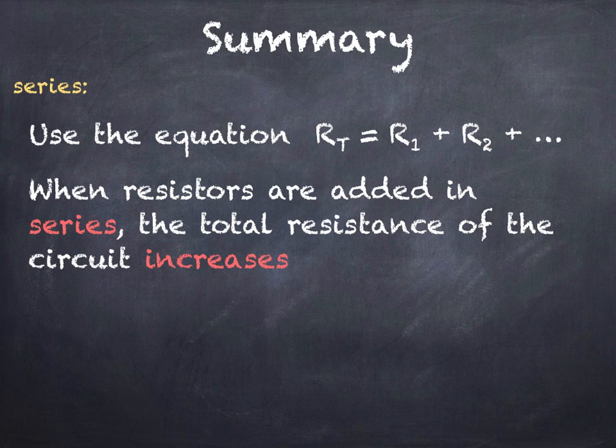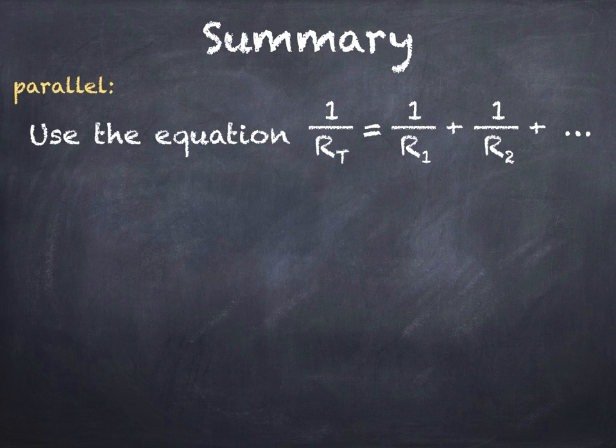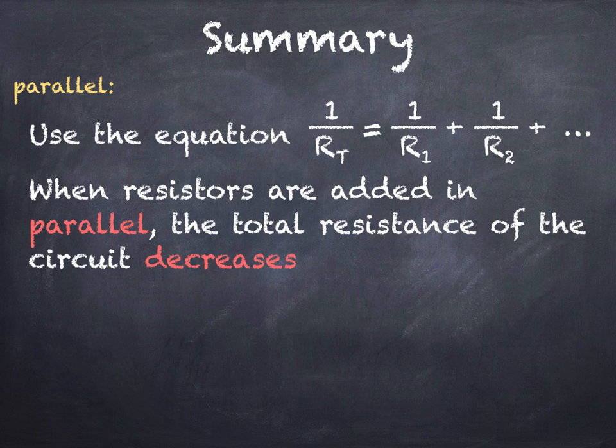In parallel we use this equation 1 over RT equals 1 over R1 plus 1 over R2 plus again depending how many resistors you have. When we add resistors in parallel the total resistance of the circuit decreases.